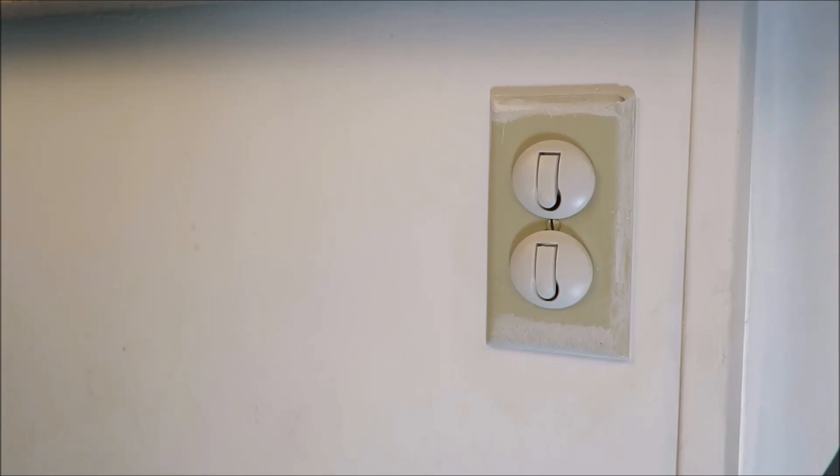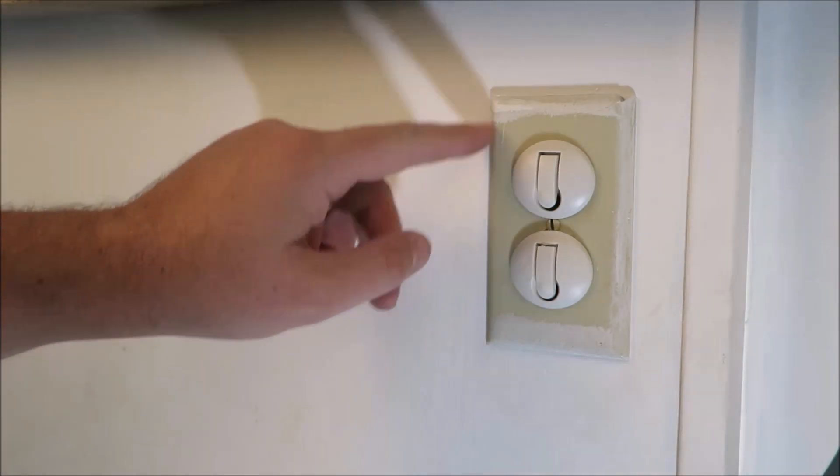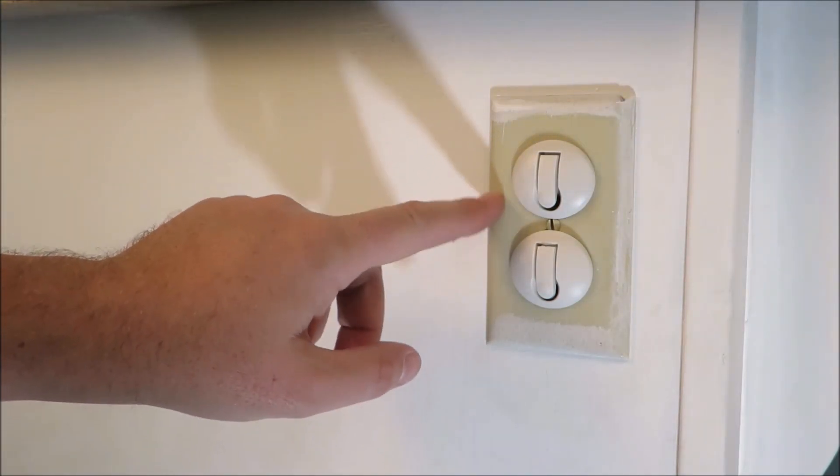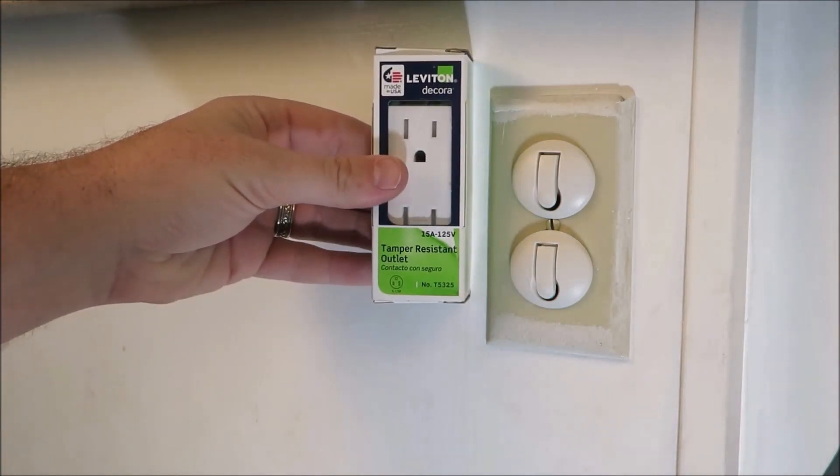Today I'm going to be showing you how to replace an old outlet. This one right here, as you can see, it's cracked, has paint all over, and it's also that ugly old tan color. We're replacing it with a nice brand new white one.